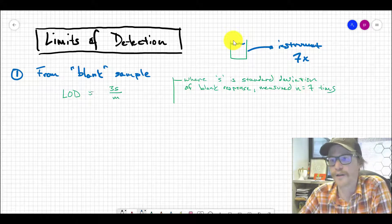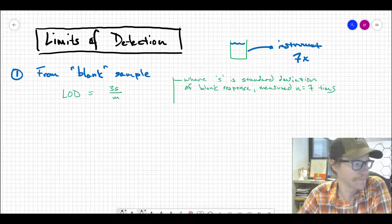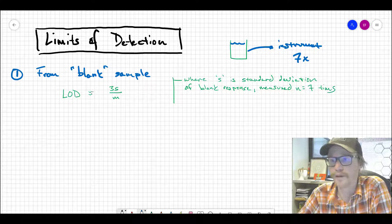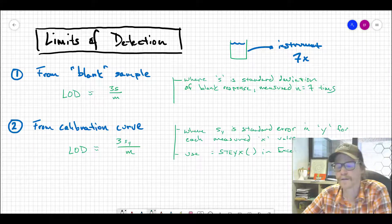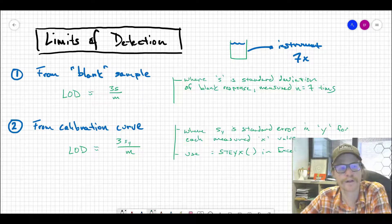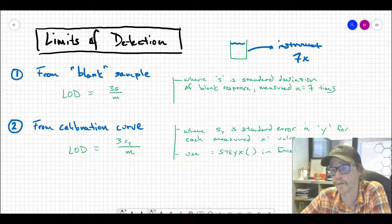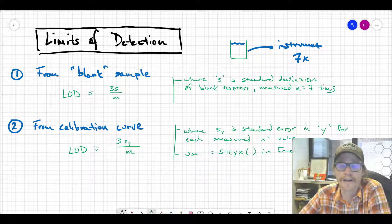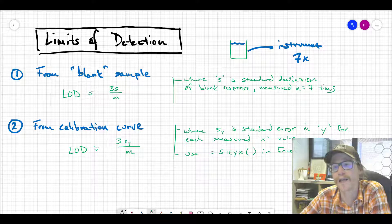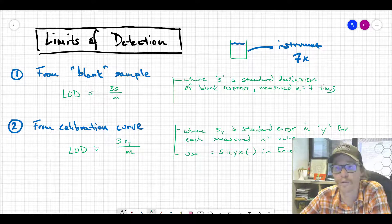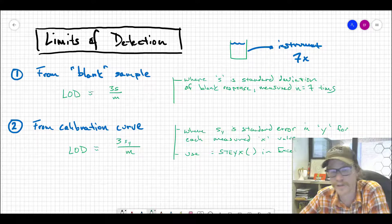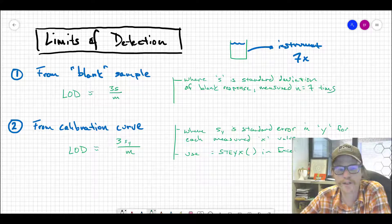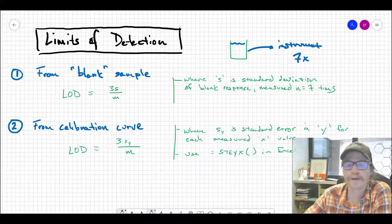The second method uses the calibration curve directly. This is the one I use more often because almost always I'm generating a calibration curve for measurements, so I have that in front of me. It doesn't require any extra measurements like the first method where you'd measure a blank seven times.